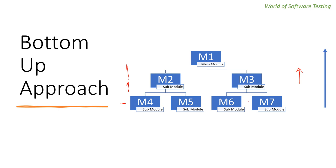In this approach, m4, m5, m6, and m7 models are developed first, then m2 and m3, and finally m1. When m4 through m7 are developed, m2 and m3 are still under development. When m2 and m3 are developed, m1 is under development. To test the lower models we need dummy programs that act as a counterpart for the top level models,